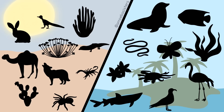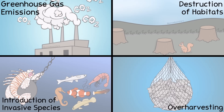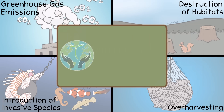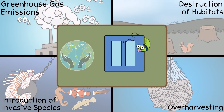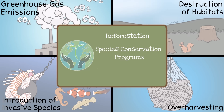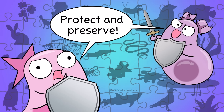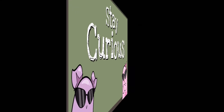Biodiversity is critical to the stability of ecosystems. Think of all we get from healthy ecosystems: food, medicines, clean water — the list goes on. Our examples focused on ways biodiversity can be negatively affected by human activity. But humans are also working to positively affect biodiversity — through reforestation, species conservation programs, and exploring sustainable practices. When we know how important biodiversity is for all of us, it's important to recognize and improve the work being done to protect it. That's it for the Amoeba Sisters — stay curious.